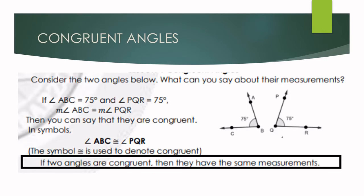When we say congruent angles, these are angles that have the same measurement. For example, angle ABC measures 75 degrees and angle PQR also measures 75 degrees. So we can say that the measure of angle ABC is equal to the measure of angle PQR, therefore they are congruent. In symbol, we can write this as angle ABC is congruent to angle PQR. Take note of the symbol for congruent.